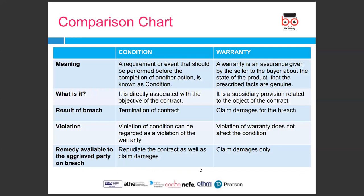Comparing conditions and warranties: a condition is a requirement that must be performed before the completion of another action. A warranty, on the other hand, is an assurance given by the seller to the buyer about the state of the product. A condition is directly associated with the objective of the contract, whereas a warranty is a subsidiary provision. The result of a breach of condition is termination of the contract, and for a warranty you can only claim damages. A violation of a condition can be regarded as a violation of the warranty, but a violation of a warranty does not affect the condition.